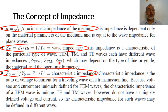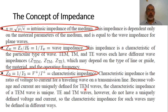For the case of transverse electric or transverse magnetic modes, there is no unique value for the characteristic impedance. In this case, we use the equivalent voltage and equivalent current. Because voltage and current are uniquely defined for transverse electromagnetic waves, the characteristic impedance of a TEM wave is unique. However, for transverse electric and transverse magnetic waves, we don't have a unique definition for voltage and current, so the characteristic impedance for such waves may be defined in different ways.